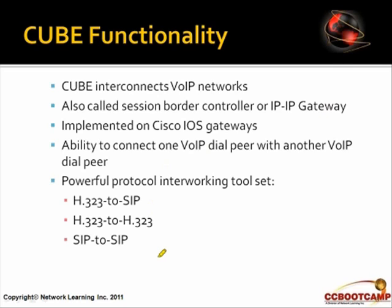CUBE is basically how we interconnect a VoIP network — it allows two separate voice-over-IP systems to talk to one another. CUBE is also known by several different names. In the old days we called it an IP-to-IP gateway or a session border controller. Cisco came out with the name Unified Border Element, offering features not always available in older operations. It's been around for years in old IOS code and is implemented on Cisco IOS gateways such as the 1700, 1800, 2900, 3900, and 7200 series, each with different scalability characteristics.